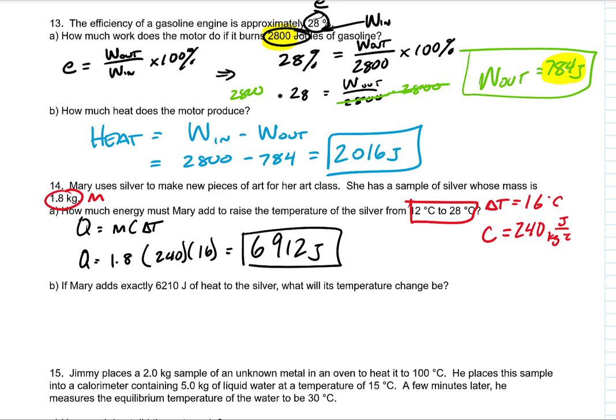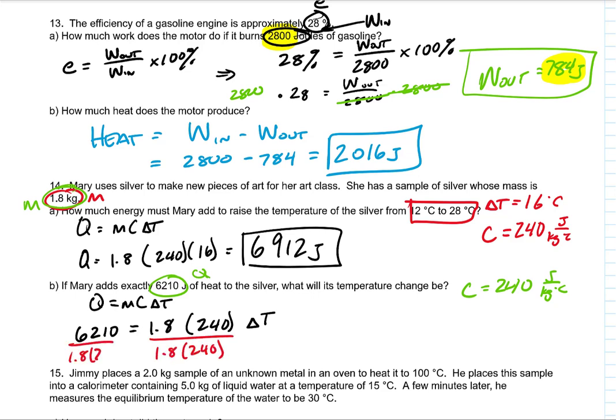If she only adds this much energy, what will its temperature change be? We're going to change it a little bit. We have the same mass. We have a new heat. And we have the same C as 240 joules per kilogram degree Celsius. So we've got Q equals MC delta T. And so we have 6,210 equals 1.8 times 240 times delta T. To solve for delta T, we divide by 1.8 times 240. And so we can calculate delta T, 14.4 degrees Celsius. That's the temperature change.